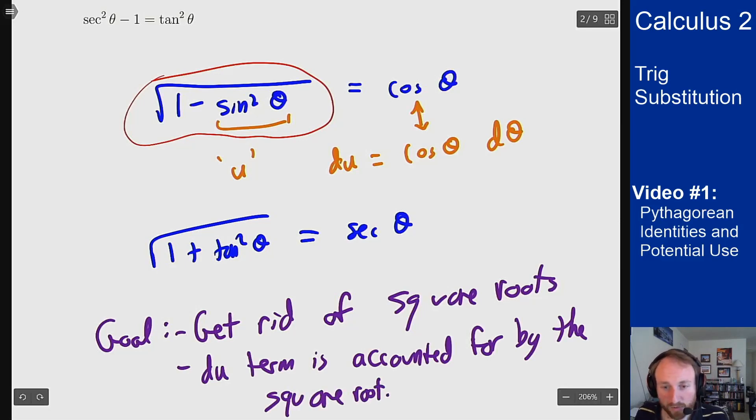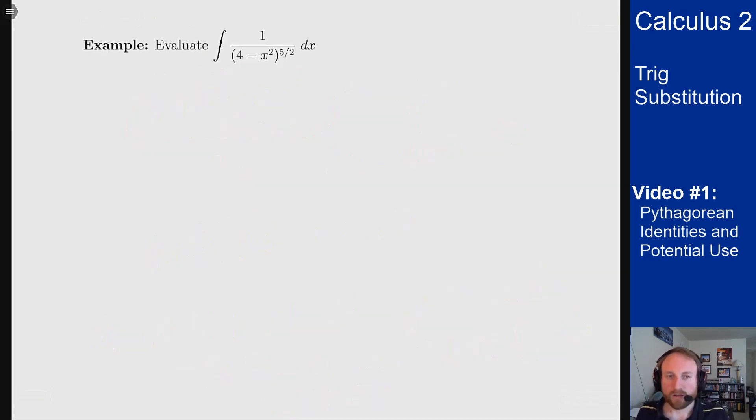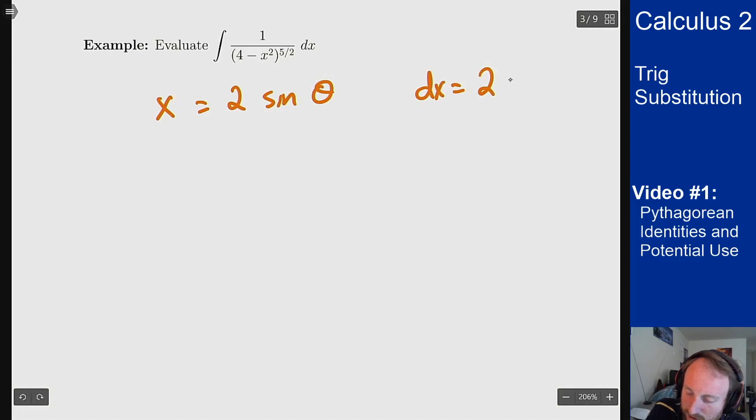So let's see an example of this worked out as sort of a motivation for why this might be helpful. So I want to solve the following integral here: integral of 1 over (4 minus x squared) all to the 5 halves power dx. At this point, we have no way to really handle this type of problem. There's no nice formula for that. The way we're going to do it is by trig substitution. So as of now, I will just tell you what we're doing, and in future videos, we'll see how you can know to choose this later. What if I let x be 2 sine of theta? Well, then dx is going to be 2 cosine theta d theta, and I can make that substitution.